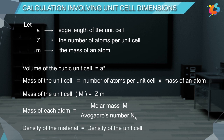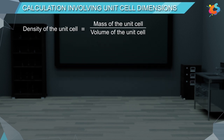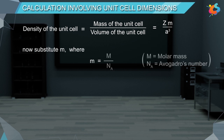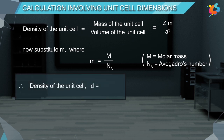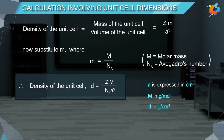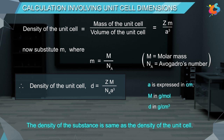Since the density of the material is equal to the density of the unit cell, the density of the unit cell equals mass divided by volume. Therefore, density D is equal to Z times M divided by Na times A cubed, where A is expressed in centimetres, M in grams per mole, and D in grams per cubic centimetre.